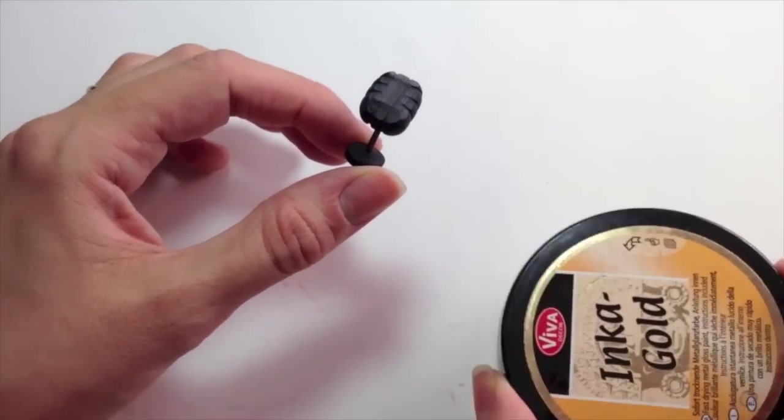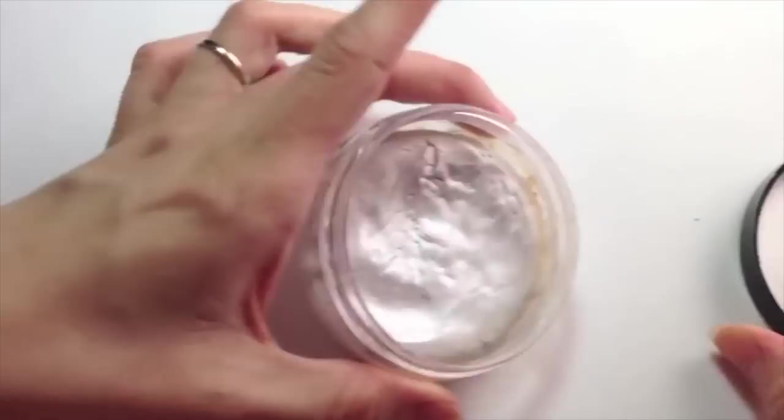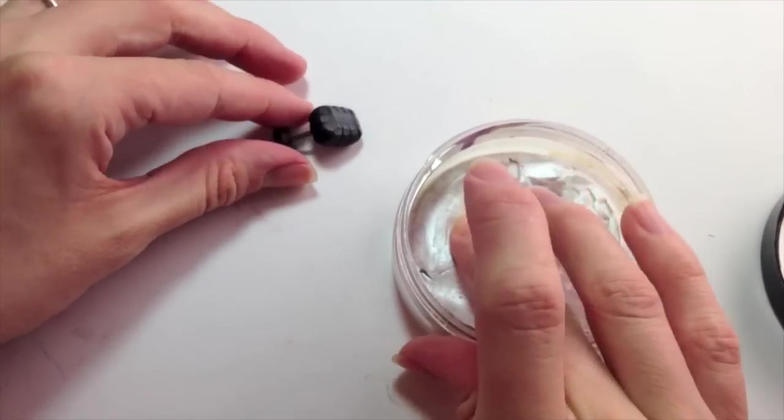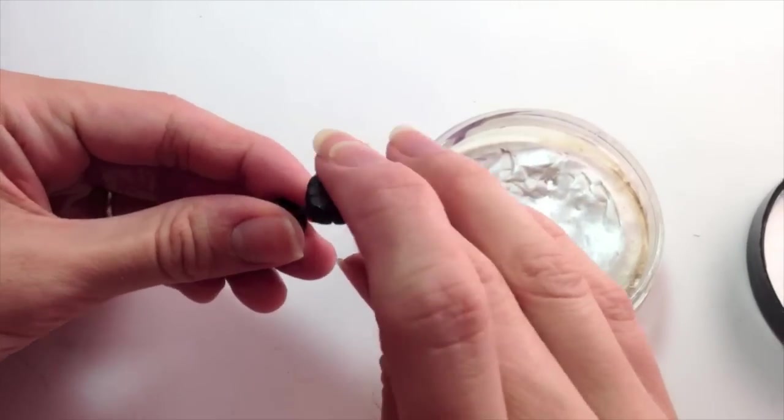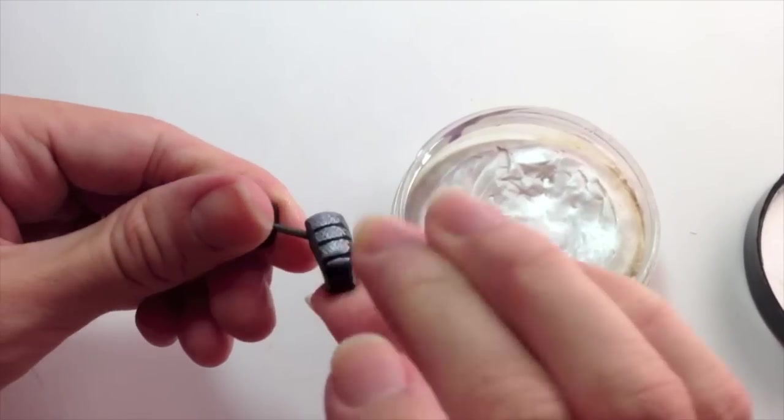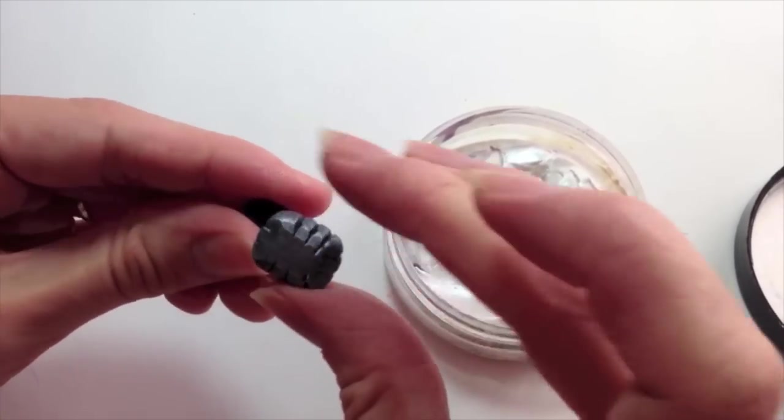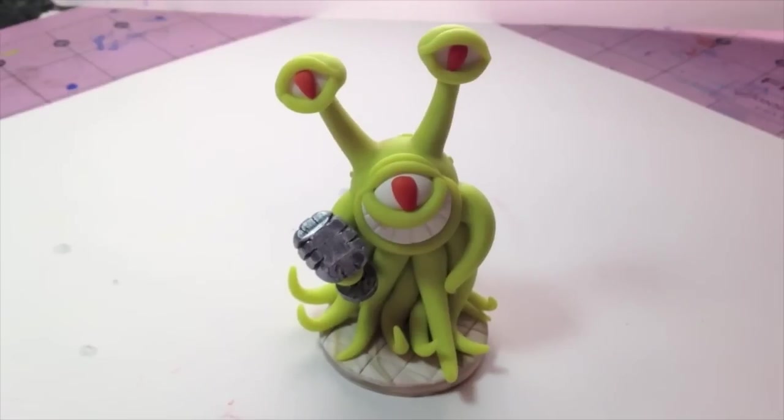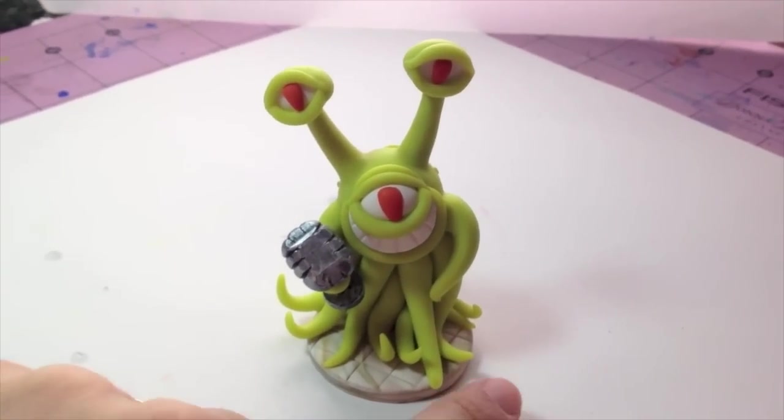While I'm waiting for the critter to bake, I'm going to paint this silver. So this is just some kind of stuff you can rub onto the clay. And it brings out the texture. I think it's just about done.